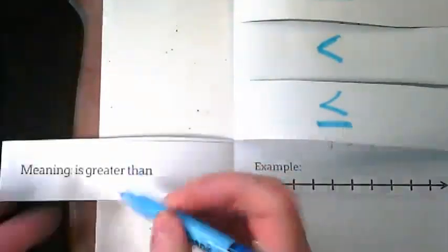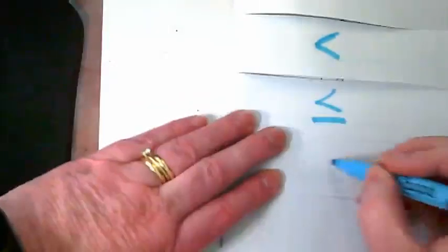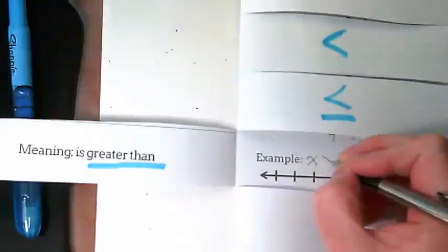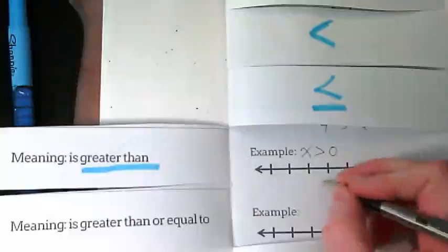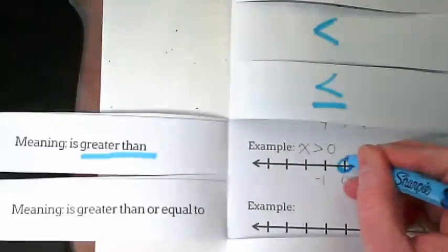Our next one, the meaning is greater than. So what's going to happen to our symbol? It's going to reverse. For my example, I'm going to put x is greater than 0.